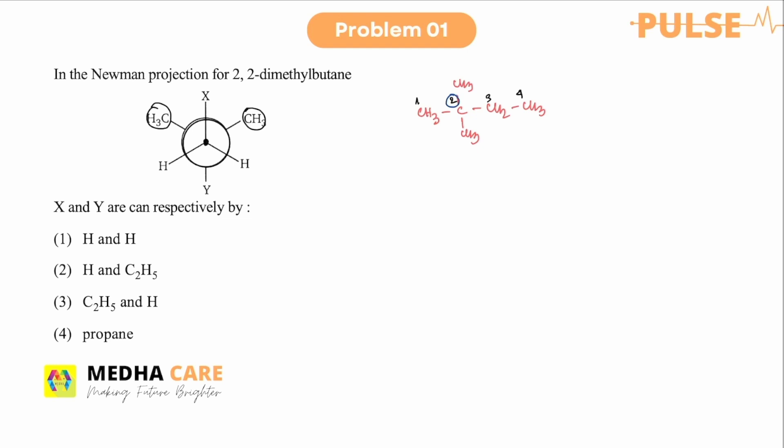That means the rear side carbon in this case is carbon number two. The question is: which one is the front carbon — carbon three or carbon one? If we consider carbon three as the front carbon, it contains a methyl group and two hydrogens. But if you see the options, methyl is not there, so carbon three is not the front carbon.